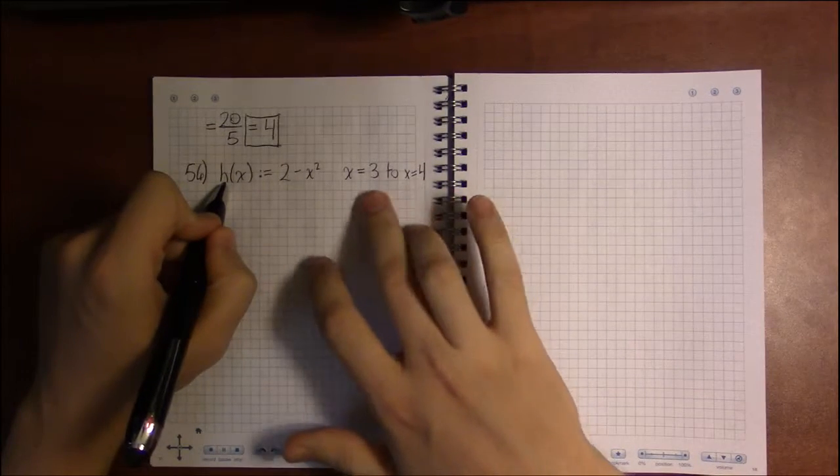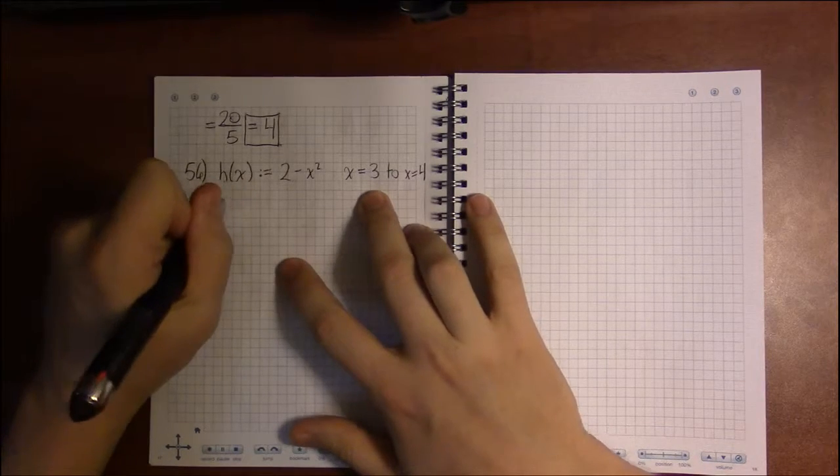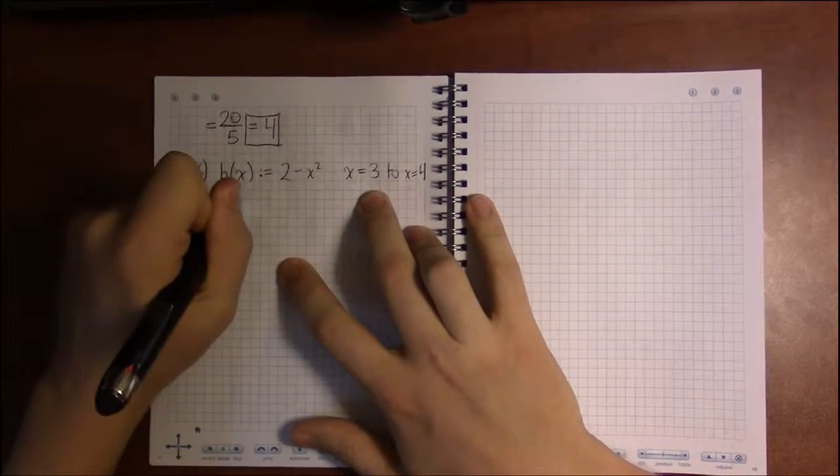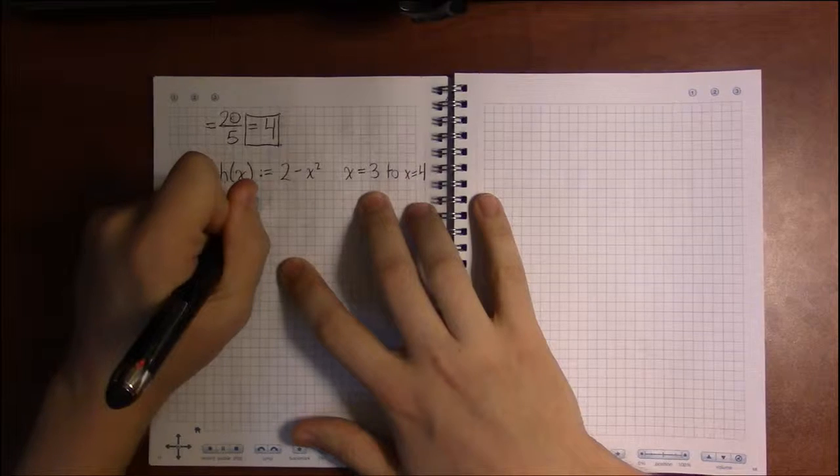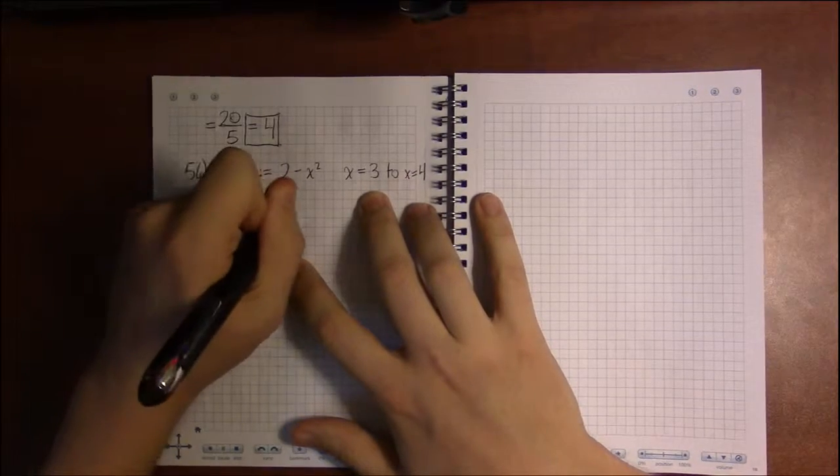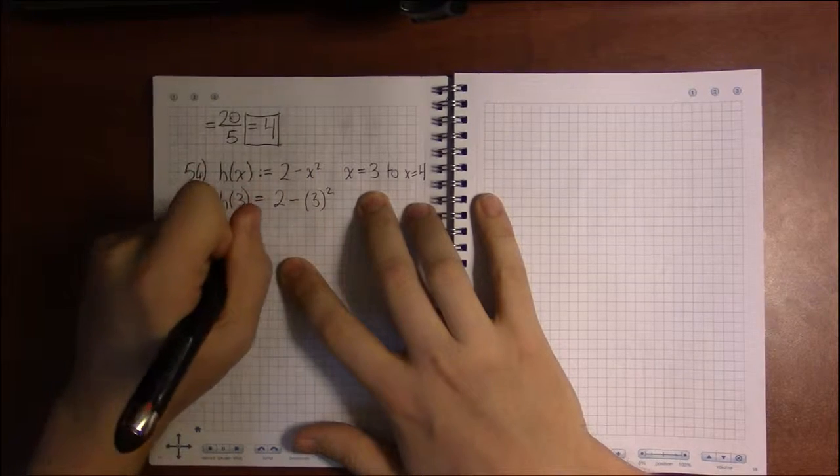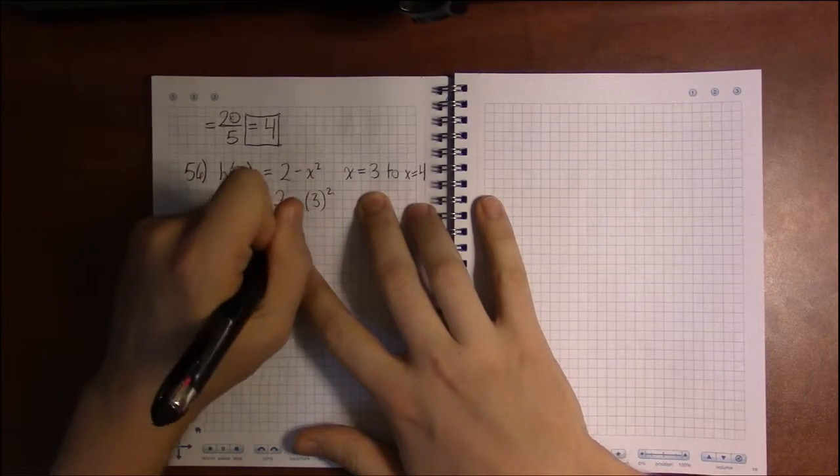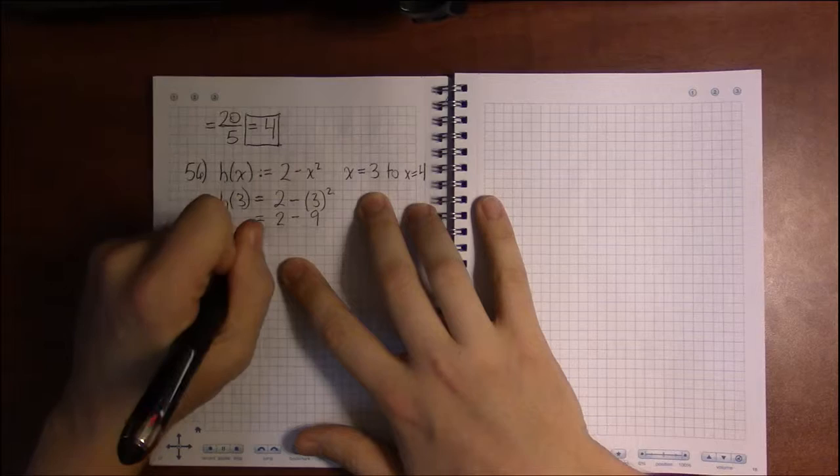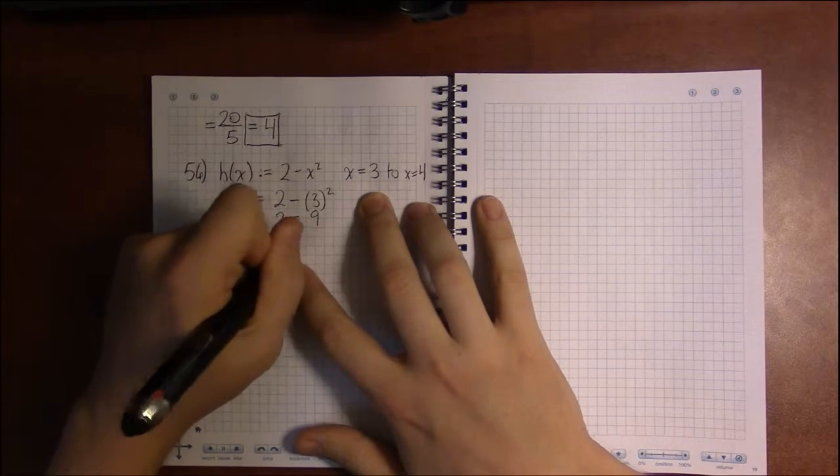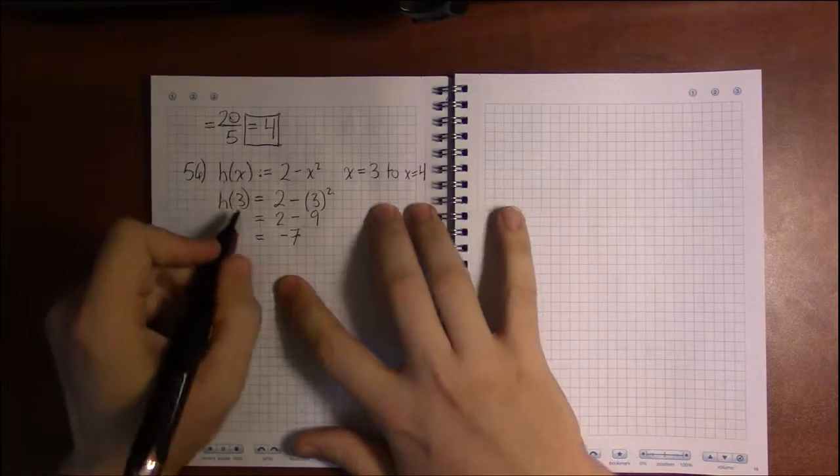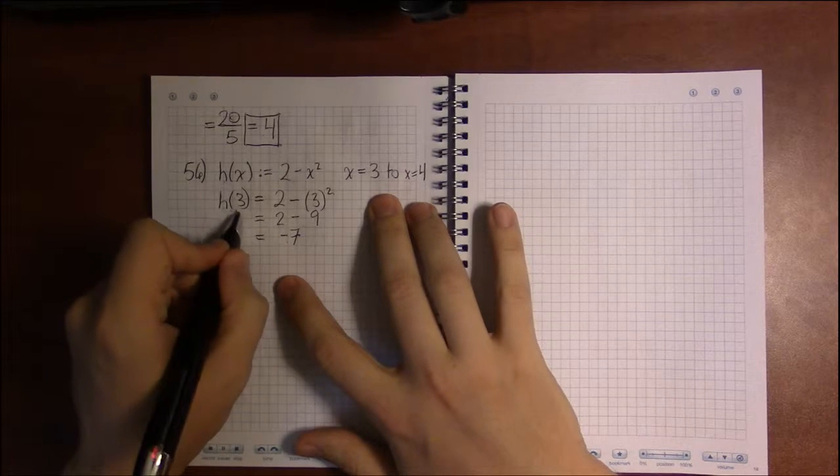So to get the average rate of change, we're going to need to find the y values when x is 3 and when x is 4. So 2 - 3² = 2 - 9 = -7. That's the y value when x is 3.